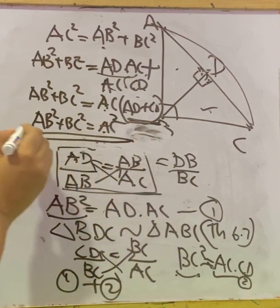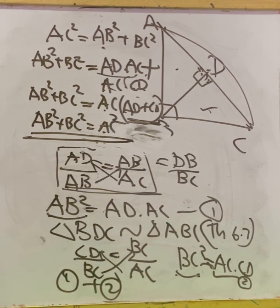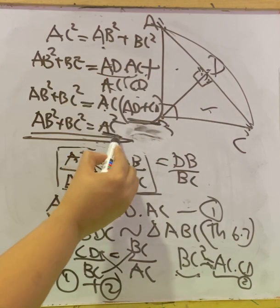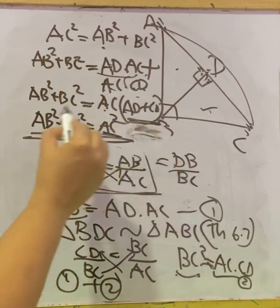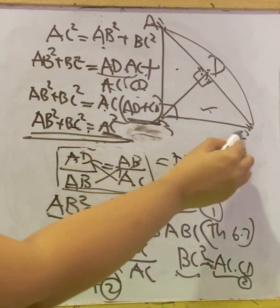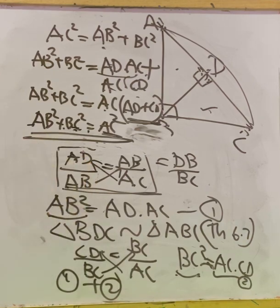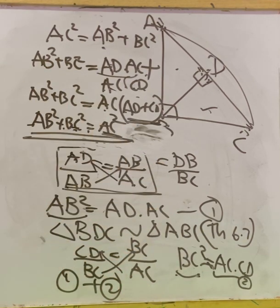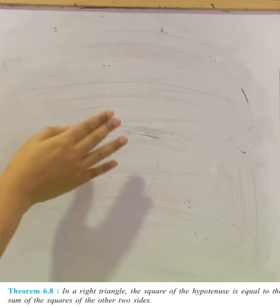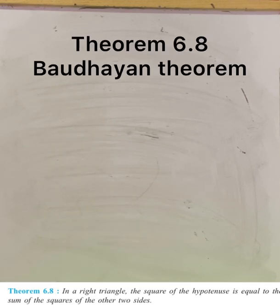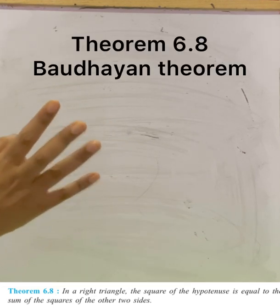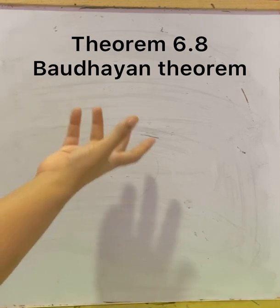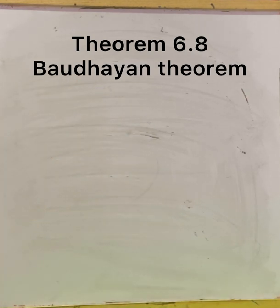Since AD + CD = AC, we get AB² + BC² = AC × AC = AC². This is what Pythagoras stated — hypotenuse squared equals base squared plus altitude squared — and we proved it using similarity of triangles. For your knowledge, Theorem 6.8 is also known as the Baudhayan theorem, because it was Baudhayan who first introduced this theorem.